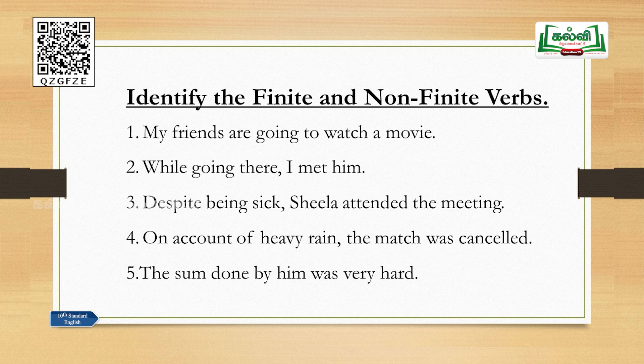Sentence 4: 'On account of heavy rain, the match was cancelled.' There is only one verb — 'was cancelled' — which shows tense clearly, so it is a finite verb. Sentence 5: 'The sum done by him was very hard.' 'Done' is the past participle form (do, did, done) — a non-finite verb. 'Was' is a finite verb showing tense clearly.